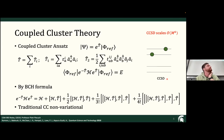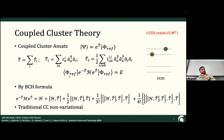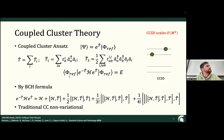If we want a variational theory, coupled cluster is what's called a projective method — I think it's because the similarity-transformed Hamiltonian is non-Hermitian. This wave function is not the adjoint of the other, so you can't apply the variational theorem. The reason we want a variational wave function is because you can keep minimizing it: if you tweak your wave function a little bit and get a lower energy, you know you're getting closer to the ground state energy. In coupled cluster, the left wave function is not the complex adjoint of the cluster operator — it's just the negative — so that's why it isn't variational.